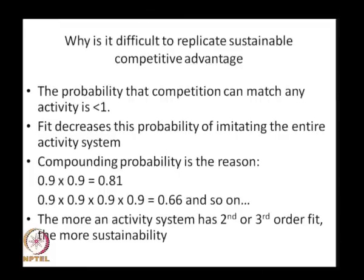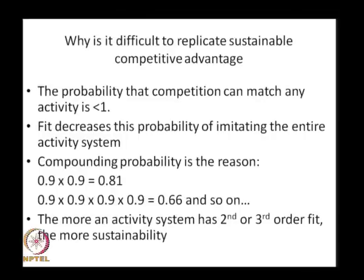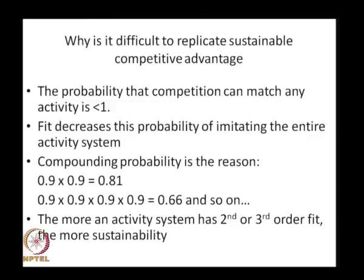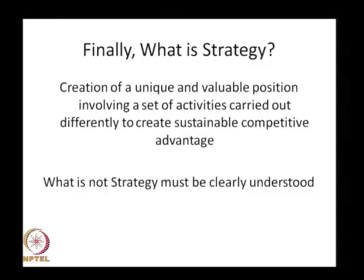The probability that competition can match any activity is always less than 1. If there is a strategic fit among all activities, the probability of imitating the entire activity chain is compounded and decreases. The probability to imitate one activity is 0.9, to imitate two is 0.81, to imitate four is 0.67, and so on. The more the activity system has a third, fourth, or fifth order fit, the more sustainable the competitive advantage, because it is very difficult to duplicate an activity fit.